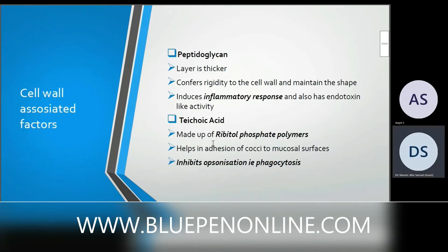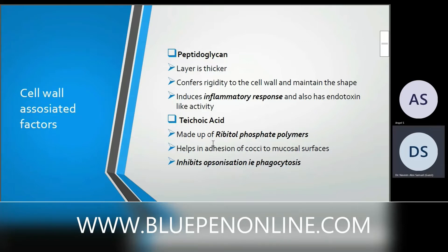Looking at individual virulence factors: peptidoglycan is a thick layer that confers rigidity to the cell wall, helps maintain its shape, induces an inflammatory response, and has endotoxin-like activity.